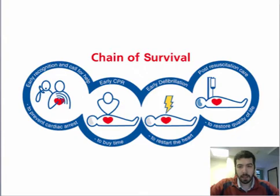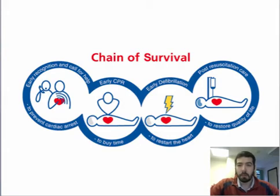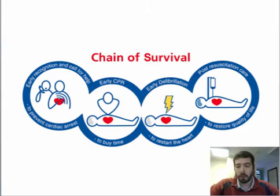The third link in the chain is early defibrillation. If we can defibrillate within three to five minutes of collapse, then we can expect survival rates to be as high as 70%. Therefore, there's still a big push for public access defibrillators. The Resuscitation Council guidelines recommend that these AEDs go into more large-scale public areas such as train stations, shopping centres, and it's also recommended that they go into schools.